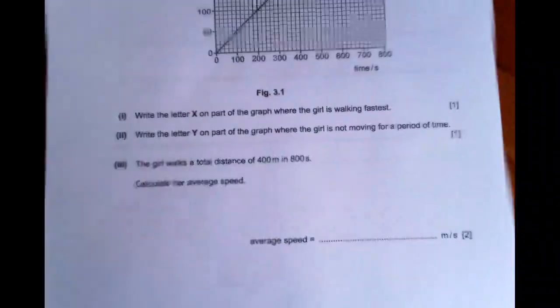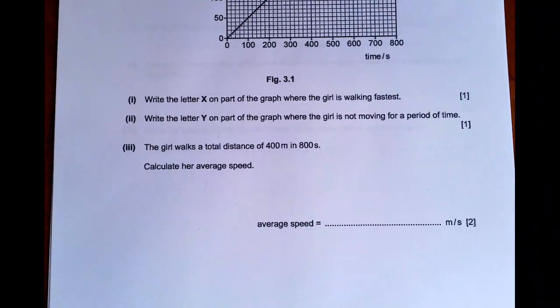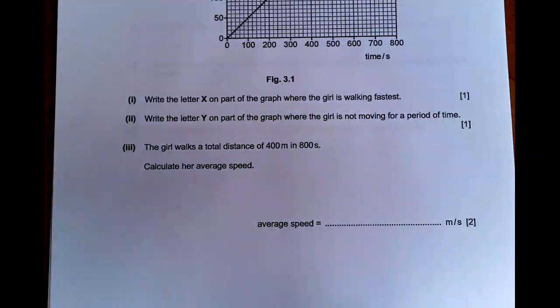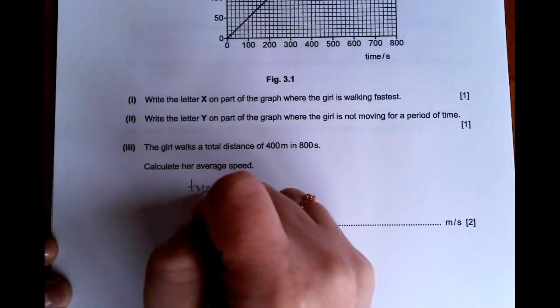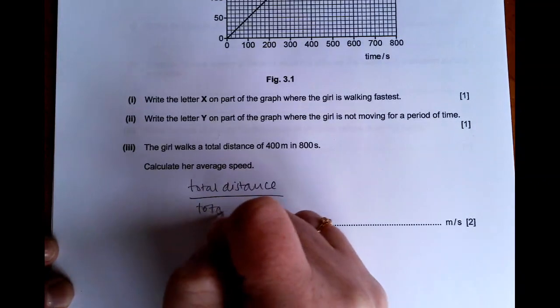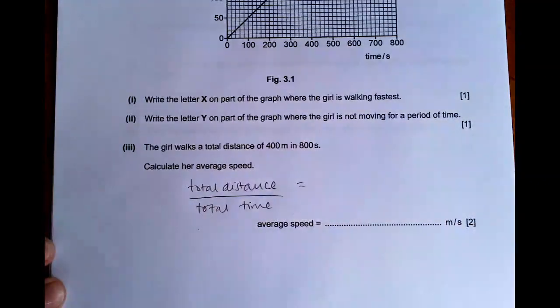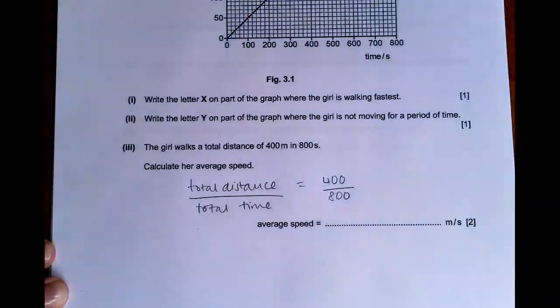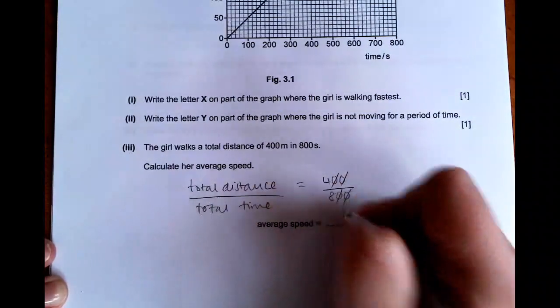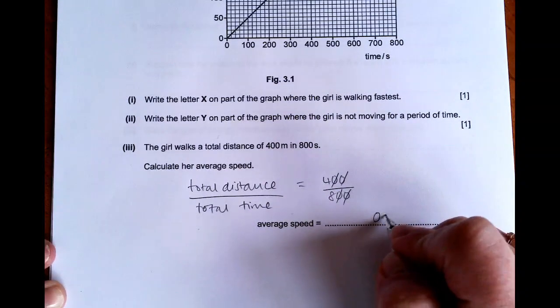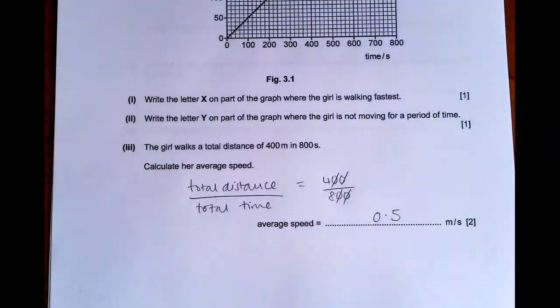So again, it tells you that the girl walks a total distance of 400 metres in 800 seconds. Calculate her average speed. So that is going to be the total distance divided by the total time taken. So she travels 400 metres in 800 seconds. The zeros cancel. Four over eight is a half. So her average speed is 0.5 metres per second there for the first physics question.